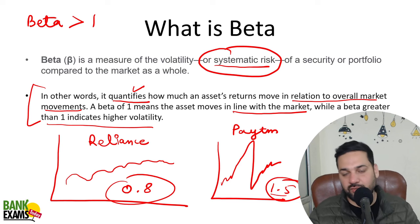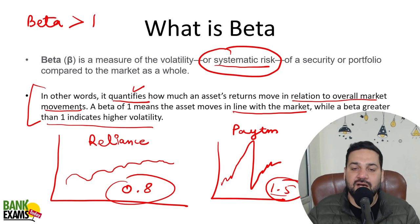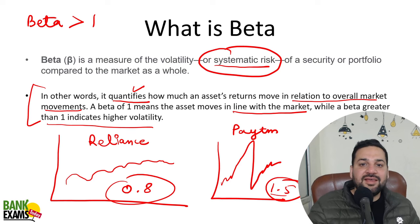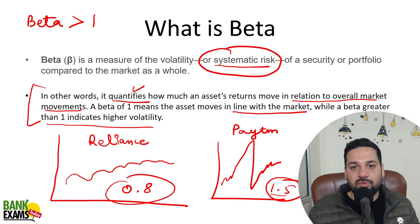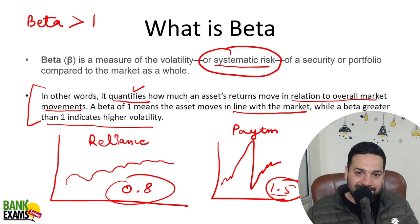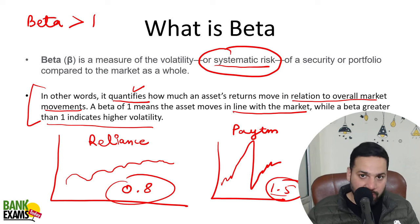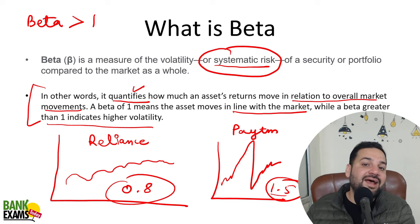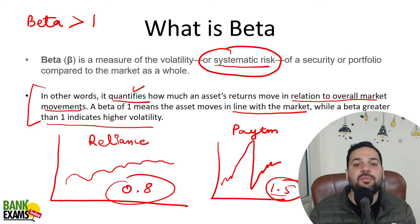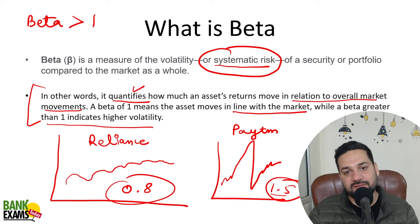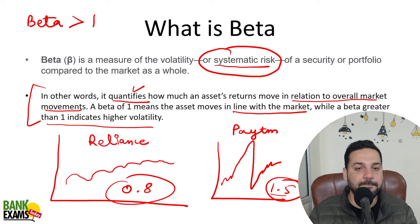So if beta is less than one, the asset is less risky compared to the market. If beta is more than one, then it is a risky asset compared to the whole market. That is what beta is.